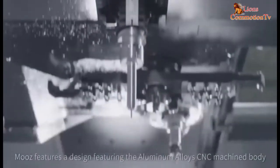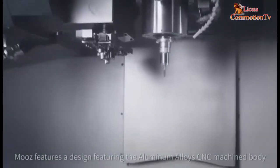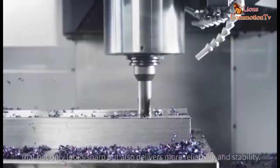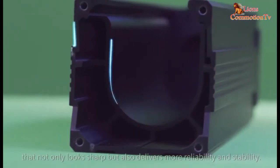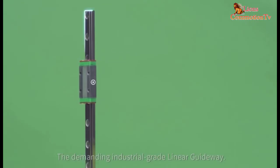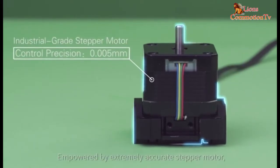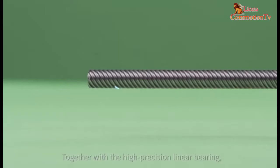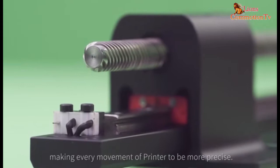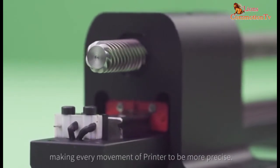Moose features a design with an aluminum alloy CNC machined body that not only looks sharp but also delivers more reliability and stability. The demanding industrial grade linear guideway, empowered by extremely accurate stepper motors, together with the high precision linear bearing, makes every movement of the printer more precise.